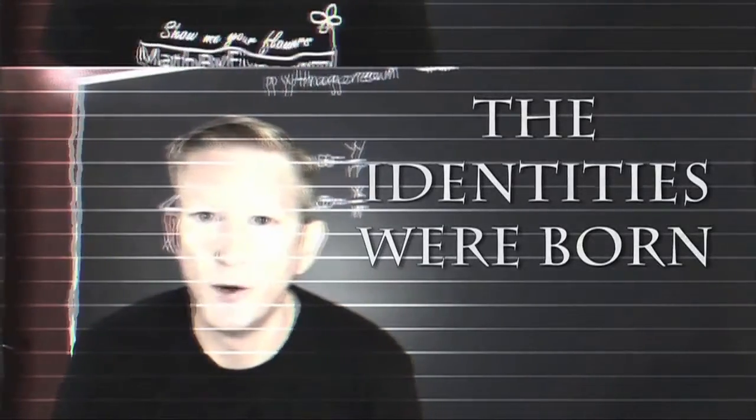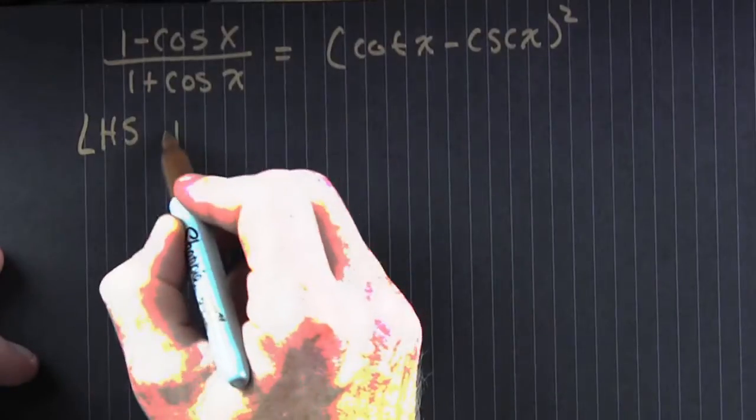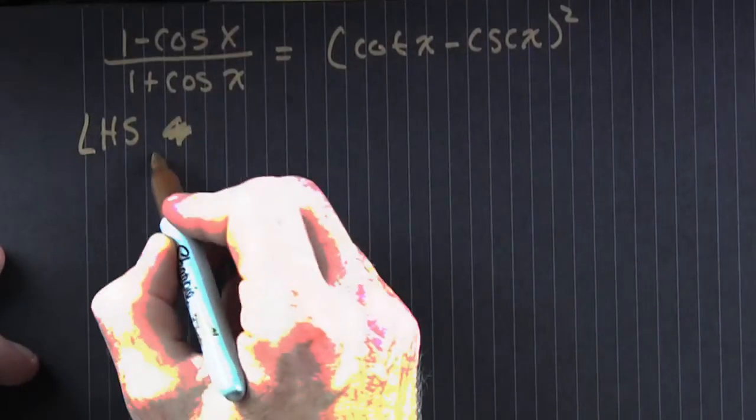And this is where the identities were born. We're going to save the princess. This is a proof. Look at what we have here.